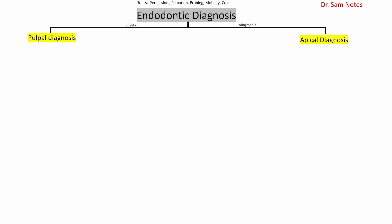When testing endodontically affected teeth, patients sometimes come in with a whole area that is sensitive and cannot identify the specific tooth. You would check multiple teeth — some may be normal, some may not be and may need treatment. In normal situations of pulpal and apical diagnosis, you see no changes in radiographs and no pulpal changes.